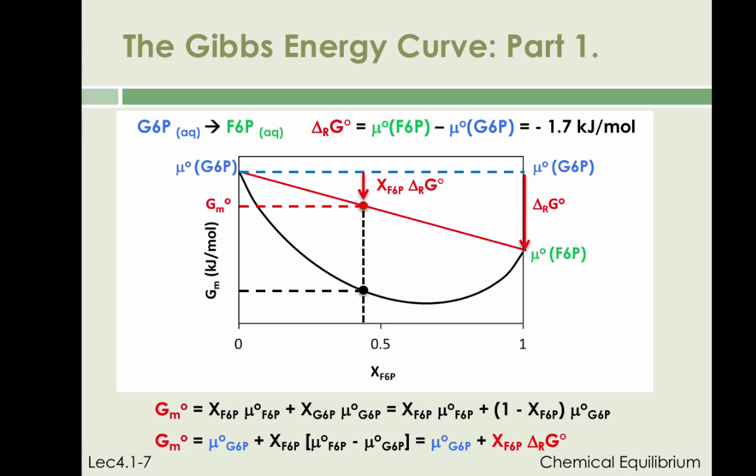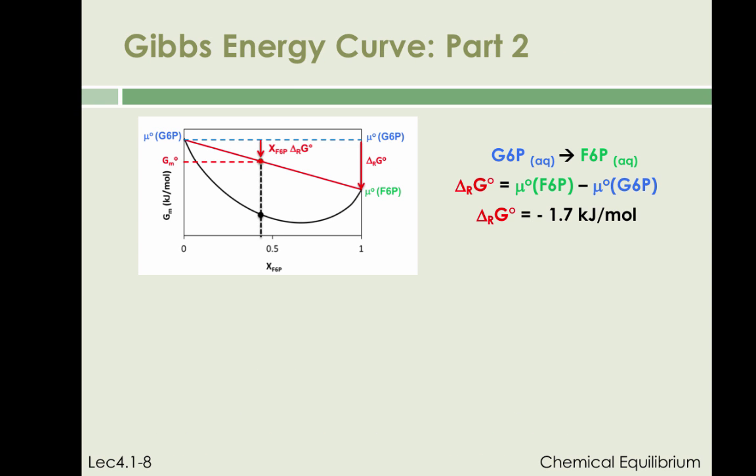On the next slide, we will show that the black arrow between the black dot and the red dot accounts for the Gibbs energy of mixing between reactants and products. On the previous slide, we calculated the standard Gibbs energy of the reactive mixture, denoted by GM standard, and showed that its magnitude is obtained by drawing a straight line between the chemical potentials of pure reactant and pure product and reading the value of GM on the y-axis corresponding to the composition X_F6P of interest.